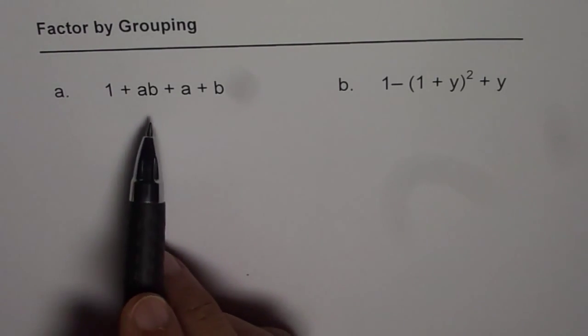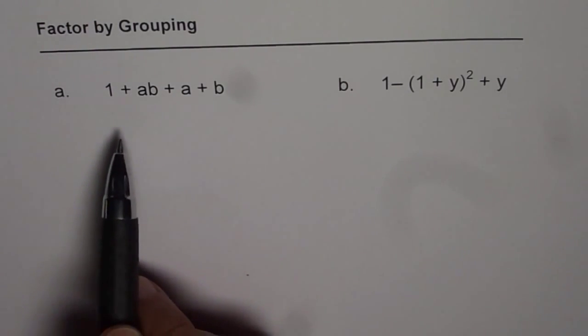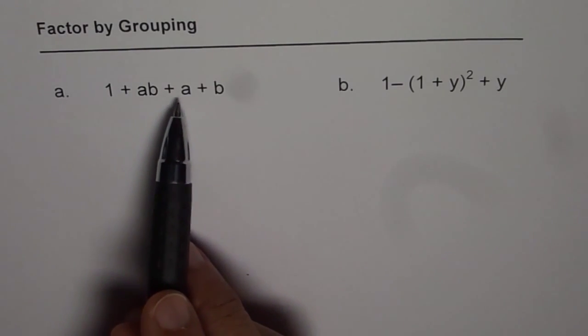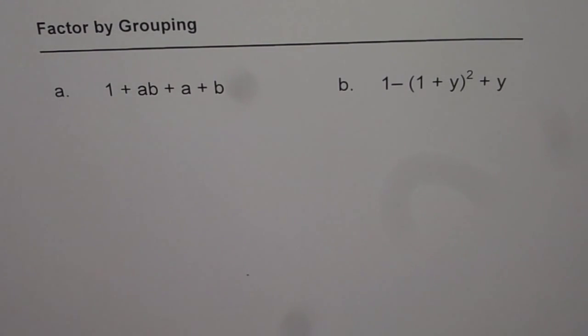So whenever you have four terms like we have in this particular example, which is 1 + ab + a + b, the possibility to factor is by grouping. Let us understand how to group.